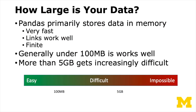One of the things about Pandas is that it primarily stores its data in memory. Depending on the size of your data, Pandas' use of memory is either a tremendous advantage — faster than a database in most situations — or it becomes a disadvantage. You can think of this as a range from easy to impossible: anything under 100 megabytes is really easy, and 20 gigabytes is going to be pretty much impossible.